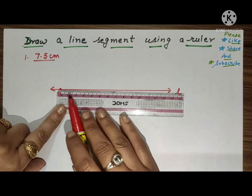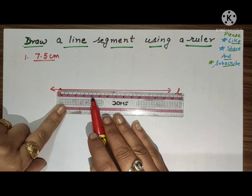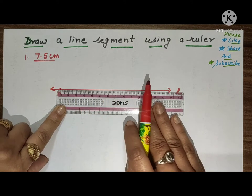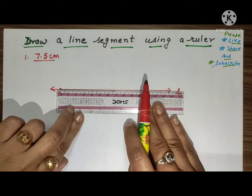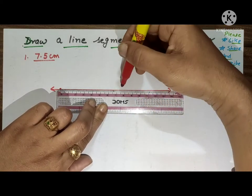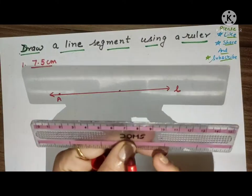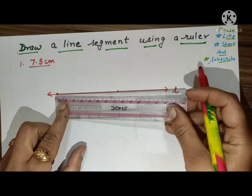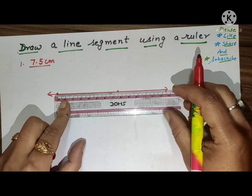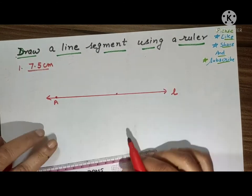It is one, two, three, four, five, six, seven, and between seven and eight will be seven point five. Here where zero coincides and seven point five coincides.